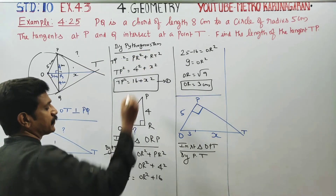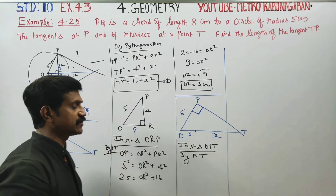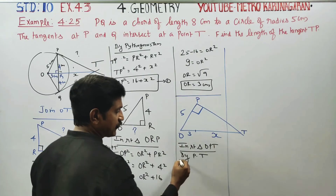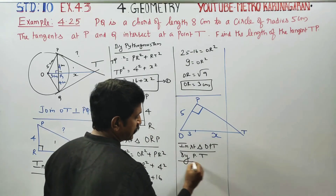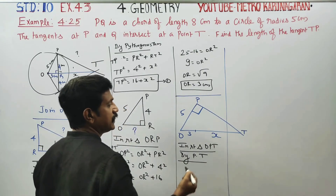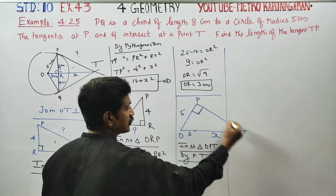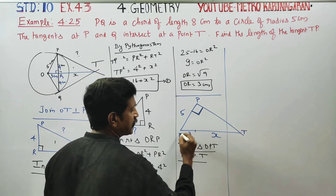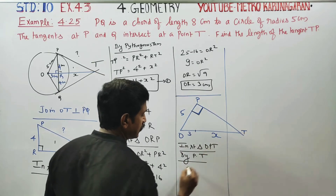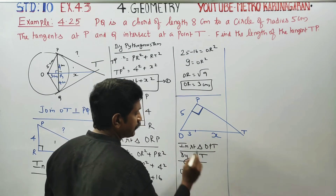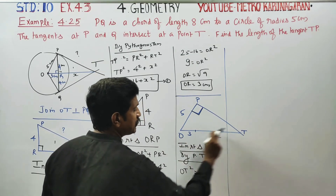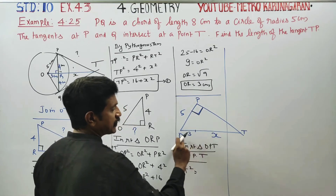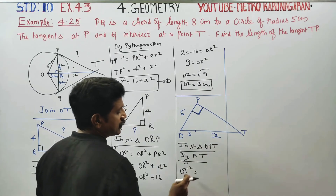By Pythagoras theorem, in the right triangle OPT, OP squared is equal to the sum of the two sides. OP is the hypotenuse with length 5. What is OT? OT is equal to OR plus RT, which is 3 plus x. So OP squared equals OT squared plus PT squared — that is, 5 squared.